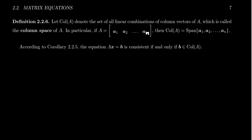In this video, we're going to introduce the notion of the column space of a matrix. So suppose we have a matrix A, which is m by n. We define the column space of that matrix, which we'll denote as COL of A for short, to be the set of all linear combinations of the column vectors of A.